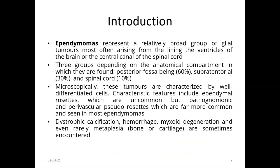In the introduction, ependymomas represent a relatively broad group of glial tumors, most often arising from the linings of the ventricles of the brain or central canal of the spinal cord. They are divided into three groups: infratentorial, which constitutes 60%; supratentorial, 30%; and spinal cord, 10%.